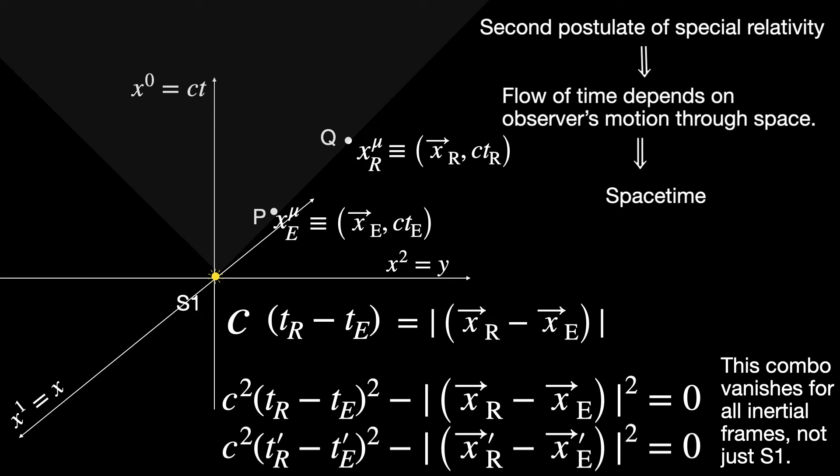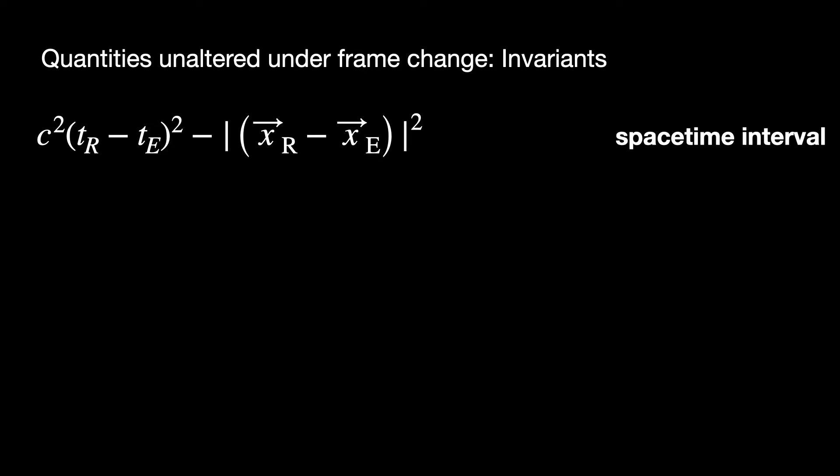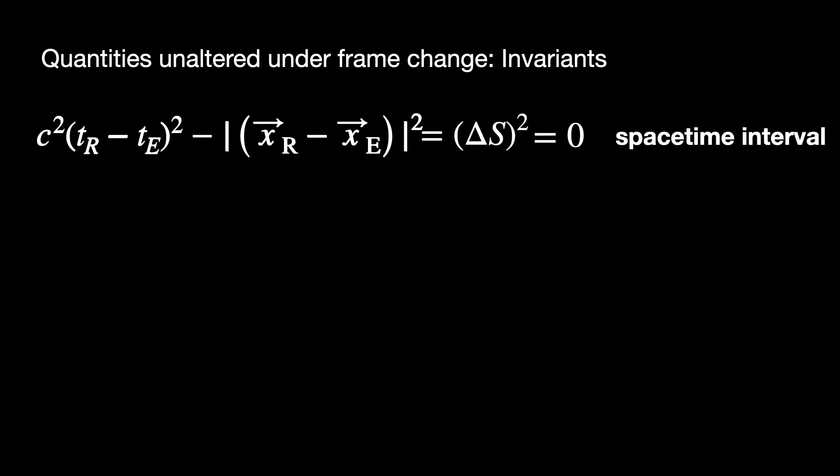This keeps happening in all inertial frames and thus we have found a quantity that remains unaltered as we jump from one inertial reference frame to the next. Such quantities that remain the same in all inertial frames are called invariant quantities. They are usually very important in physics so we tend to name them. This particular invariant object is called the spacetime interval for obvious reasons. After all it's made of spatial and temporal intervals. We also give it a symbol Δs². Delta here signifies that it is an interval or a difference and of course the letter s comes from the word segment.